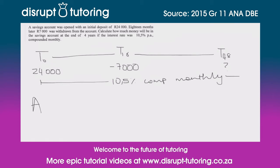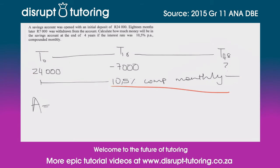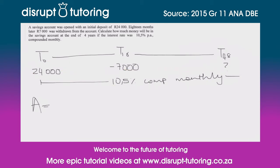The first thing to consider is we put R24,000 into this account and it's going to grow at 10.5 percent compounded monthly for the full 48 months. So we say the amount is R24,000 multiplied by (1 + 0.105/12) to the power of 48.